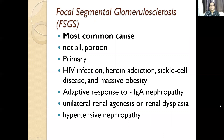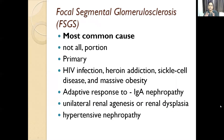Coming to the third one — focal segmental glomerulosclerosis — which is usually a cluster of diseases that can be either primary or associated with secondary diseases like HIV infection, heroin addiction, sickle cell disease, and massive obesity. Focal means only a fraction, segmental means a part of the glomerulus — remember this.